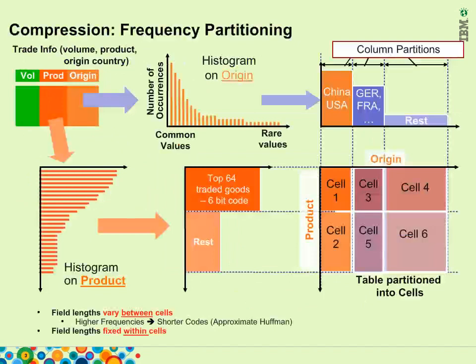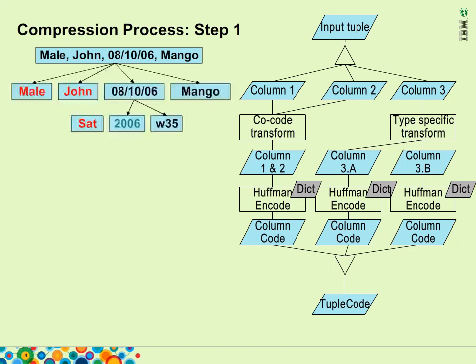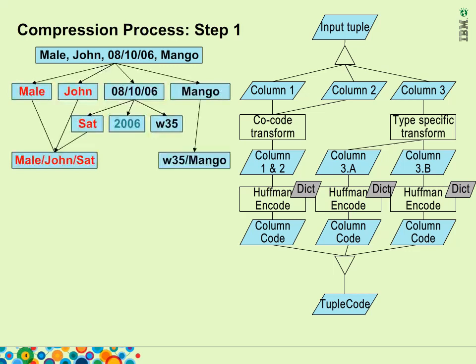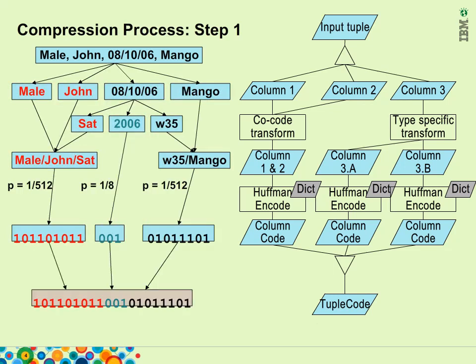This example shows the compression steps used in IWA. Starting with the record containing name, sex, date of purchase, and product, histograms are built for each column. Relationships between columns are then evaluated, causing columns of values with 'male' and 'john' to be combined. The purchase date is broken up into smaller columns which are then further combined with other columns, as shown with week 35 (W35) and mango. Finally, depending on probability of value occurrences — such as p = 1/512 for 'male john sat' — those values are encoded into bits 101, 101, 011, and so on.